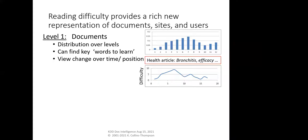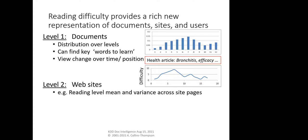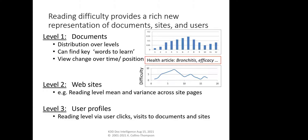Suppose you have billions of web pages and label them — what does that allow you to do? We were able to do a bit of that at Microsoft Research. For sets of documents, you can see on a particular website how reading level and variance change across pages. You can identify individual words somebody would need to learn to make a document more readable. And once you combine these rich representations of content with interaction behavior, you can start building user profiles — looking at the reading level of what somebody clicks on and visits to improve the user-content matching.